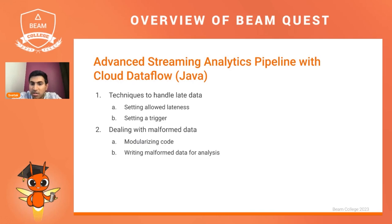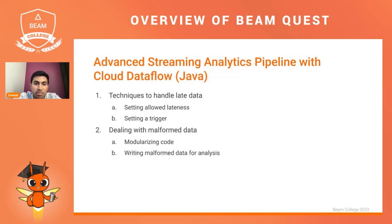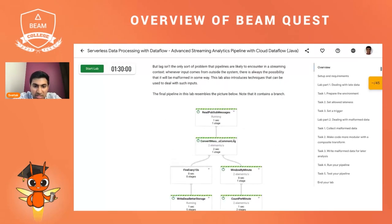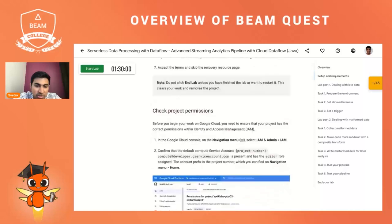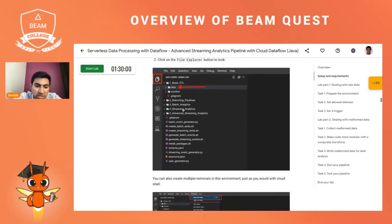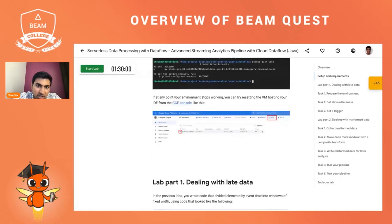The second lab will be very similar to the first one in how we write our code. We'll open the same kind of IDE URL and it'll have very clear instructions on what to do and where to write the code. That's it for these first two labs — join us in the next session where we'll talk about the remaining three labs in this quest.